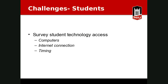One way of addressing the challenge of student technology readiness is to give them a technology survey — something you put in the Blackboard course asking questions about computers, internet connections, and timing. A survey is not the same as a quiz because it doesn't have right or wrong answers. It's just getting a sense of the capabilities of your students, so you can assess the degree of challenge they may face regarding technology access.